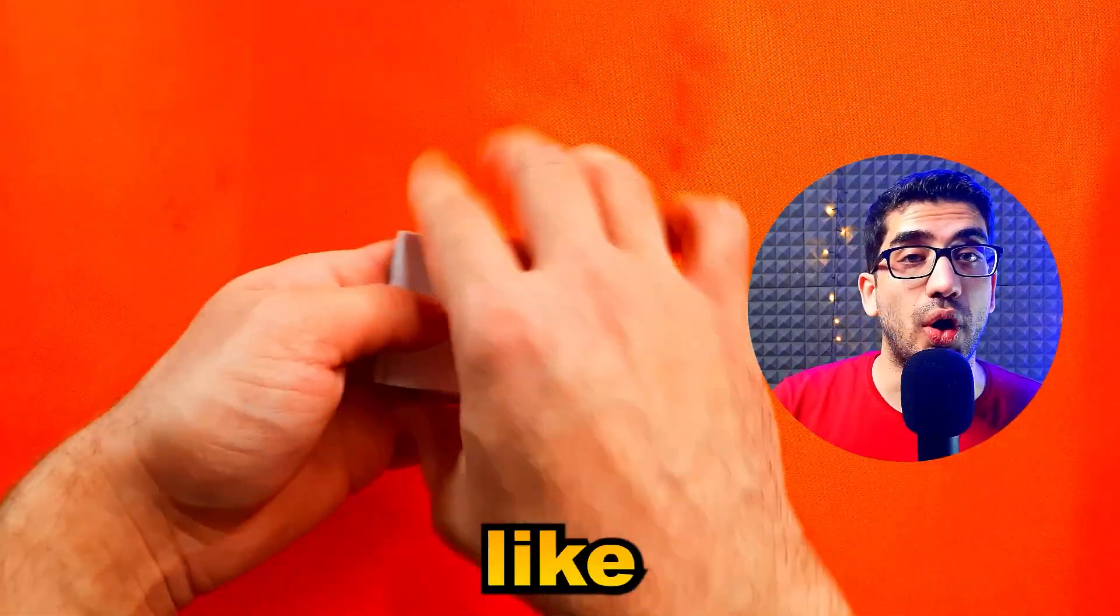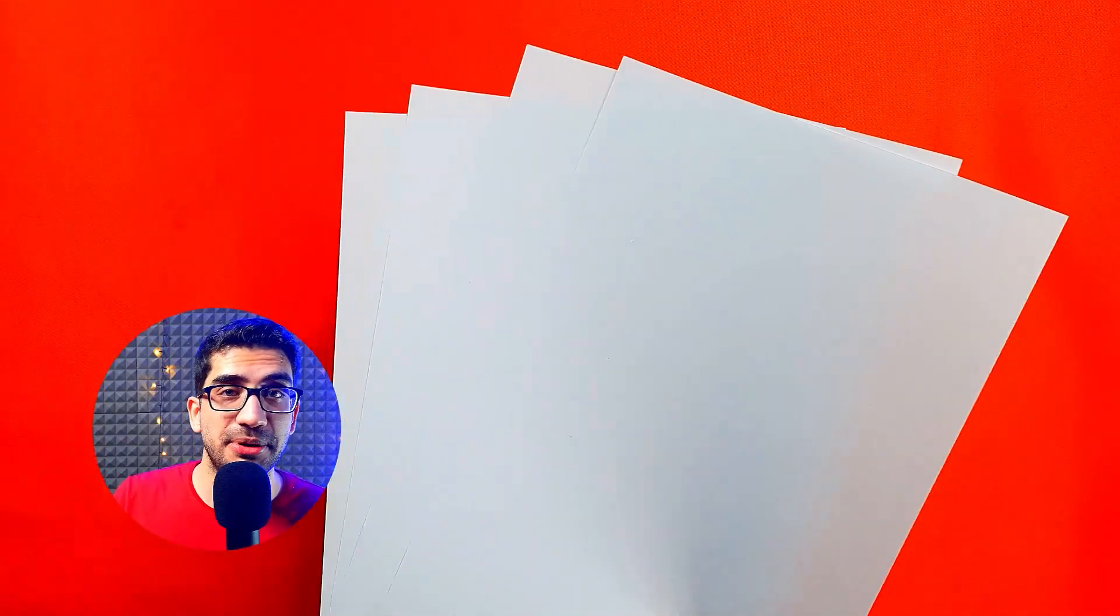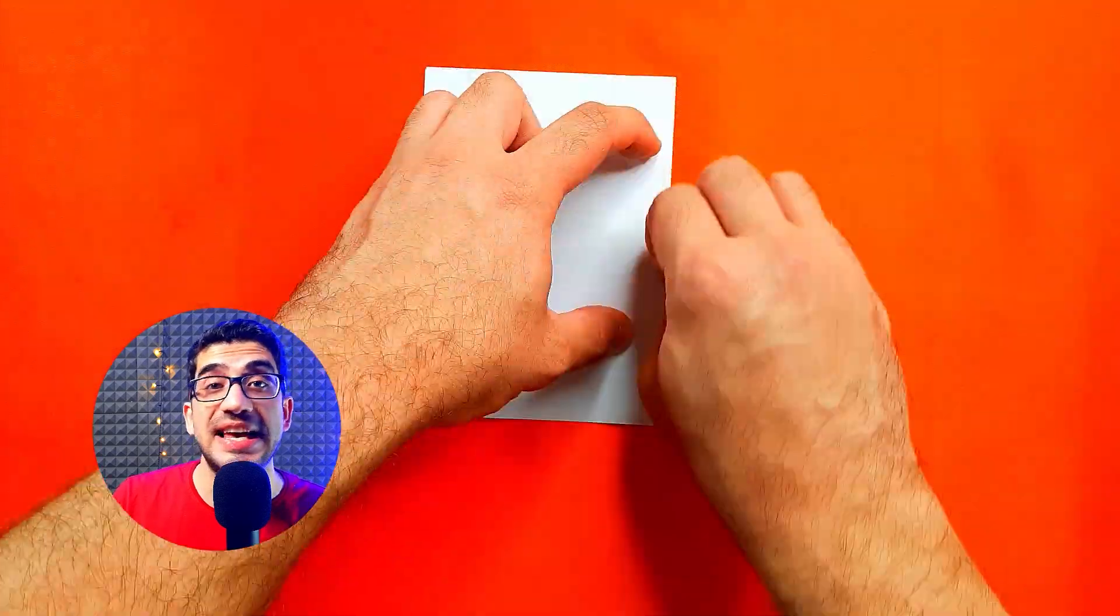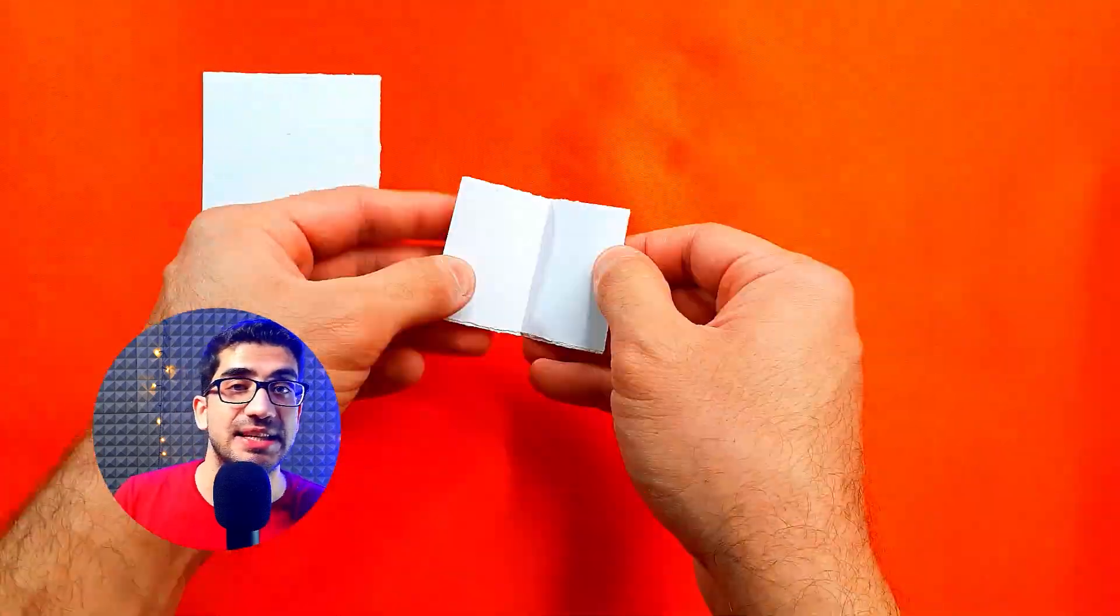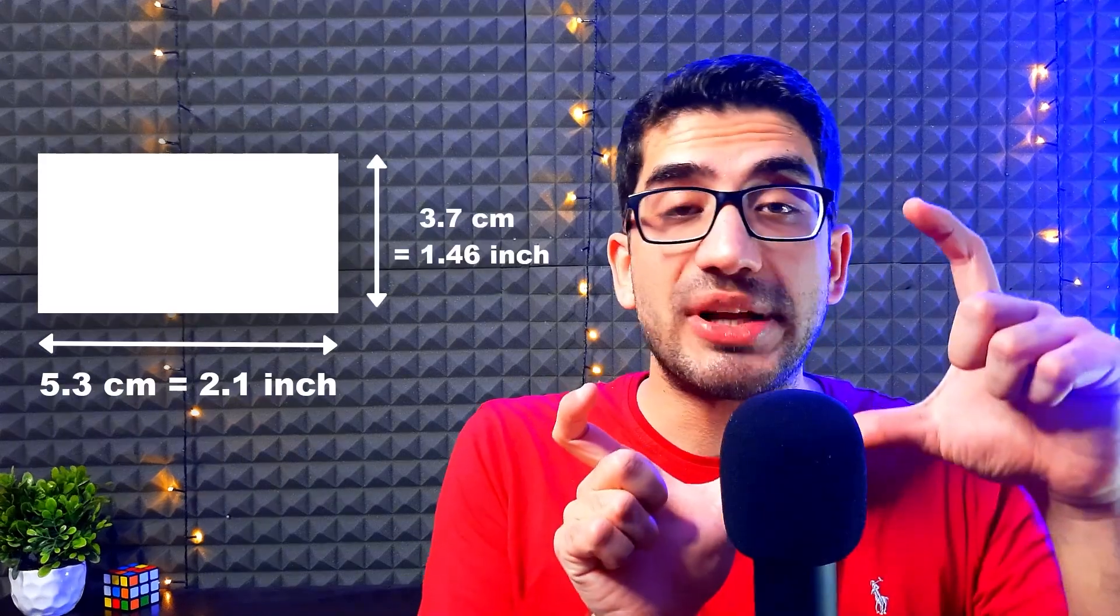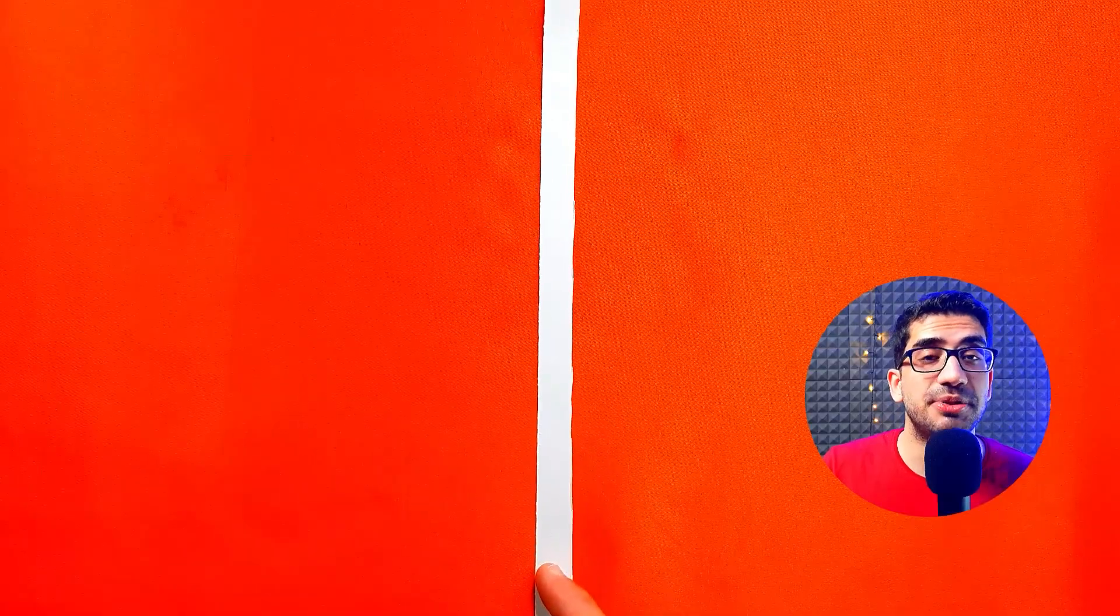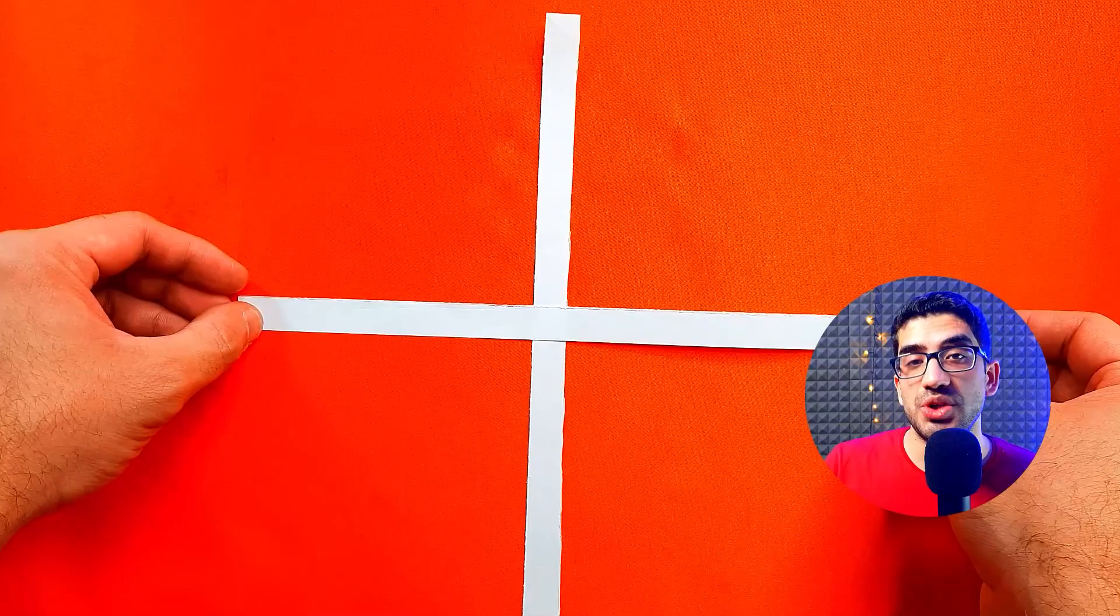First of all, we need some flashcards like these. For this purpose, I use A5 papers and divide them into 16 pieces to have small flashcards, which each of them is 5.3 by 3.7 centimeters. Then I prefer making a cross like this, which gives me four quadrants.